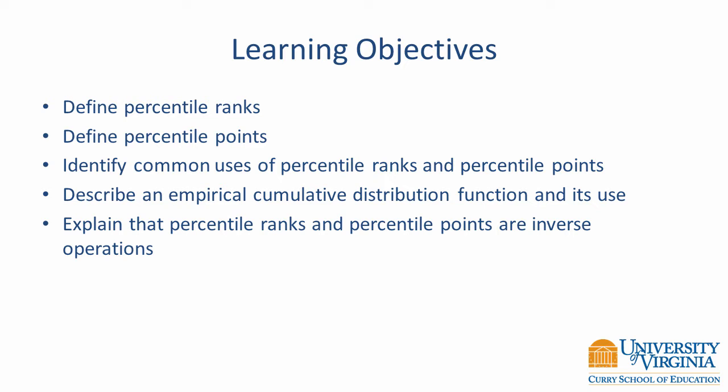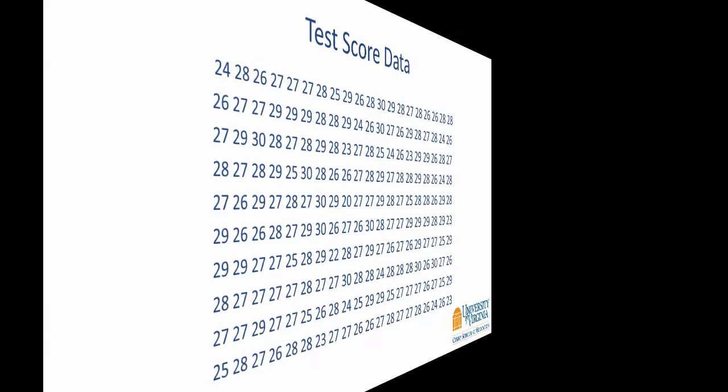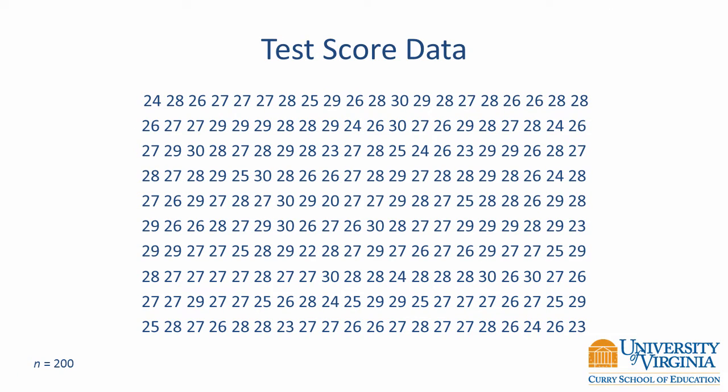This video does not go into detail about percentile rank and percentile point calculations. There are additional videos that demonstrate how to compute them. Suppose we have conducted a study involving 200 examinees. We could look at all 200 scores shown on this slide, but it would be difficult to identify any patterns or trend in the data. This problem only gets worse with larger data sets. It is much more helpful to condense the sample data into a few meaningful numbers that describe all of the important characteristics of the data.